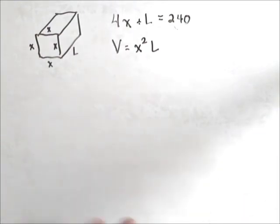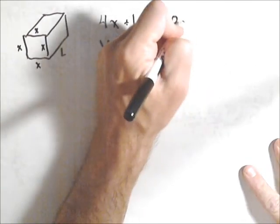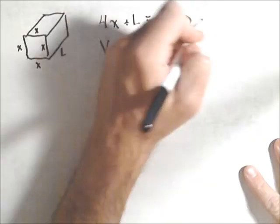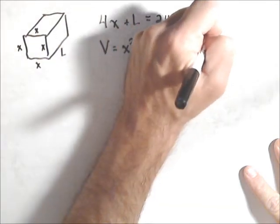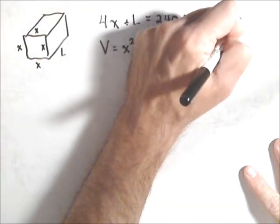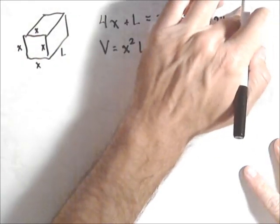So what we want to do is get that volume in terms of one variable. So let's solve this for L. So L equals 240 minus 4x.